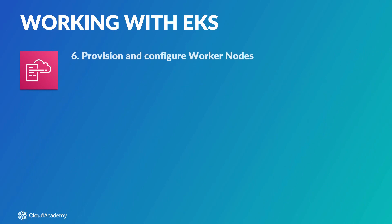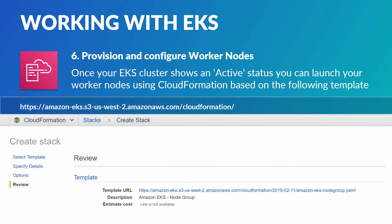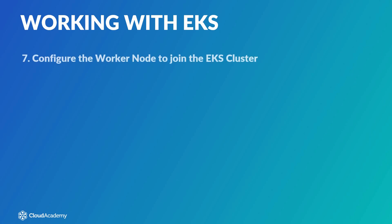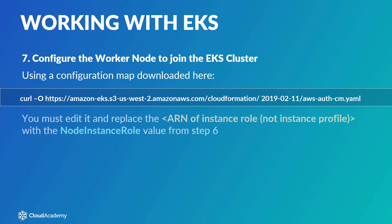Next, provision and configure worker nodes. Once your EKS cluster shows an active status, you can launch your worker nodes using CloudFormation based on the provided template. And finally, you need to configure the worker nodes to join the EKS cluster. Using a configuration map downloaded from the provided link, you must edit it and replace the ARN of the instance role — not the instance profile — with the node instance role value from the previous step.